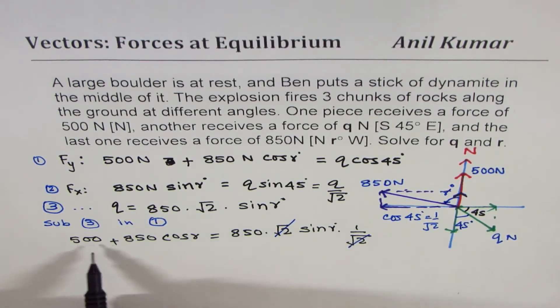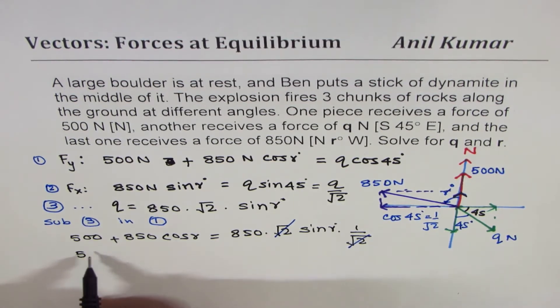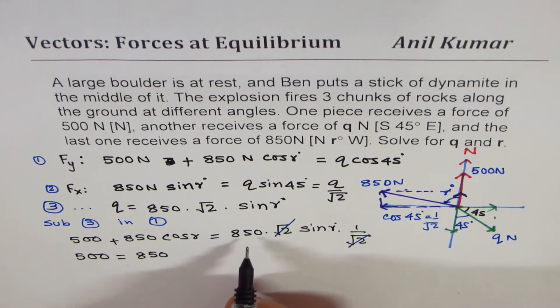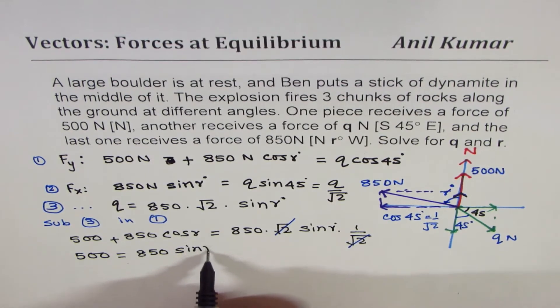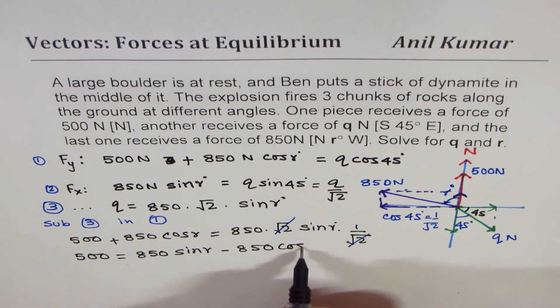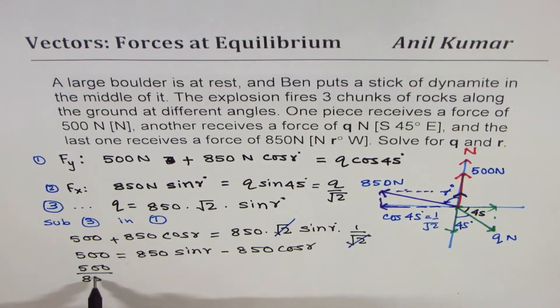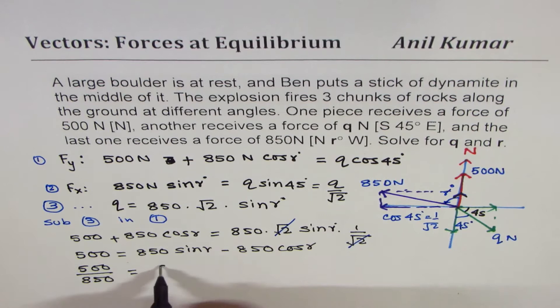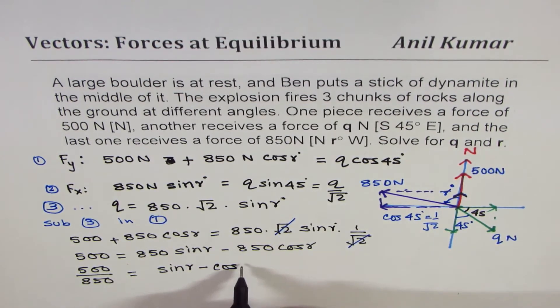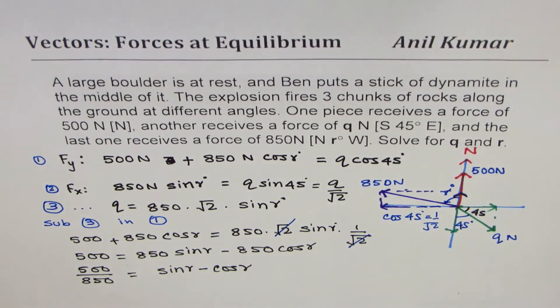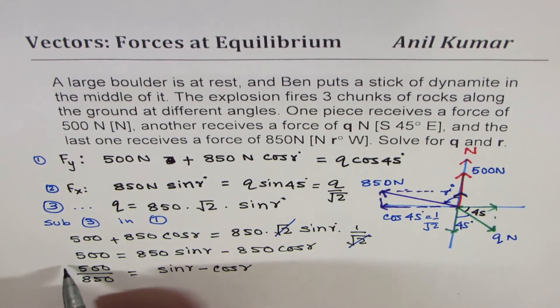Bringing sine and cosine terms together, we get, so what we have here is 500 equals to 850 sine r minus 850 cosine r, and we can divide by 850, so we get 500 over 850, taking 850 common, so we get sine r minus cosine r. We divided everything by 850, now we have to solve for r from this particular equation. We can square both sides.